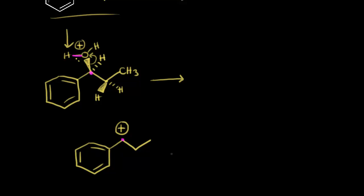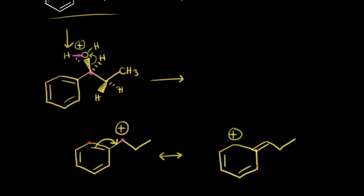This benzylic carbocation is stable because we can draw several resonance structures. We could take these electrons and move them out to the ring, placing a plus one charge on that ring carbon. You could keep going and draw more resonance structures. This is a benzylic carbocation that is resonance stabilized.